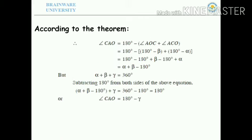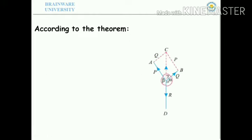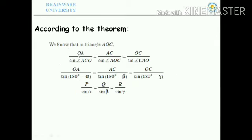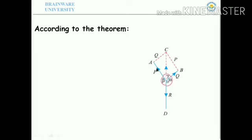We can see that OA = P and OB = Q. Applying the sine rule to triangle AOC: OA/sin(ACO) = AC/sin(AOC) = OC/sin(CAO). Since OA = P and AC = Q, substituting the angles — sine ACO = sine(180 minus alpha) = sine alpha, and sine AOC = sine(180 minus beta) = sine beta.